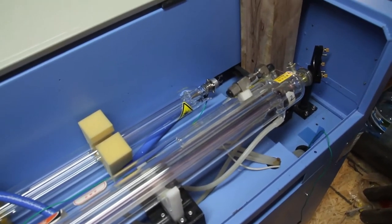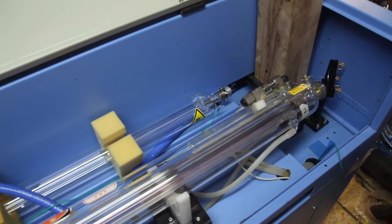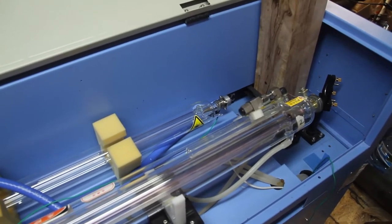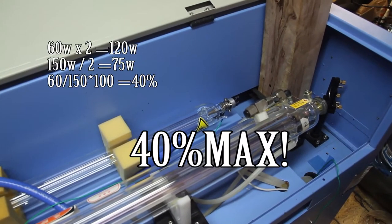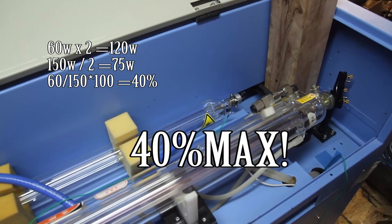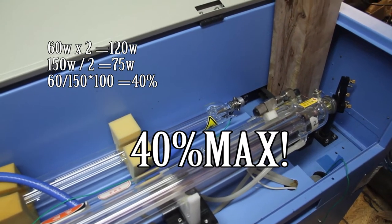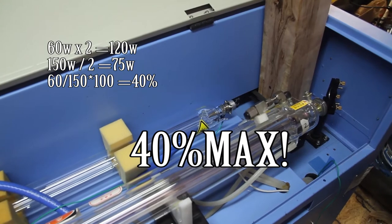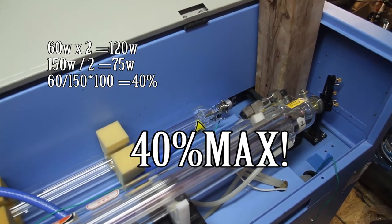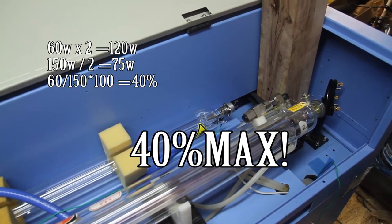30% then? It's a 60-watt tube, so we can take it up to 50, 60%. 30% because that's a 150-watt power supply. Yeah, it's 150 watts. This is a 60-watt tube, so we can only take it to about 30%.